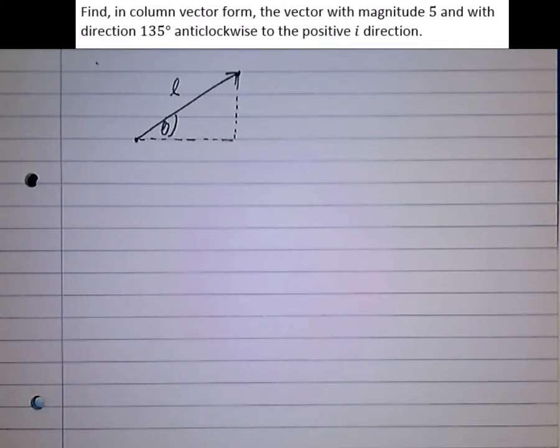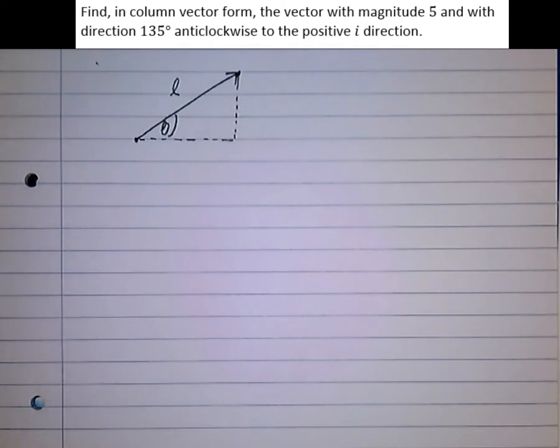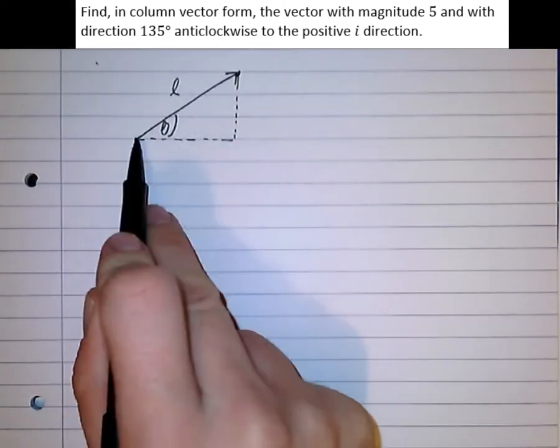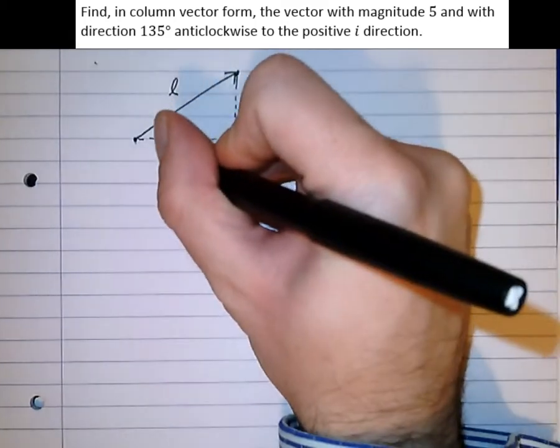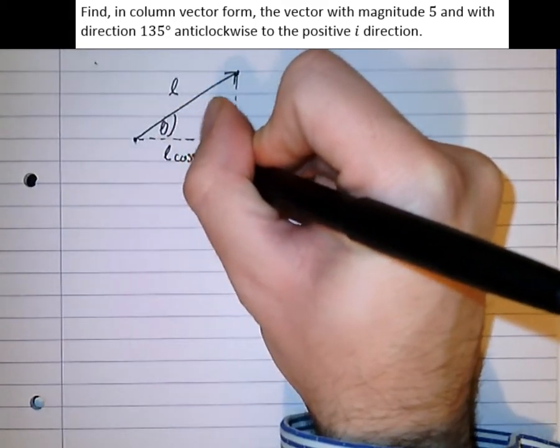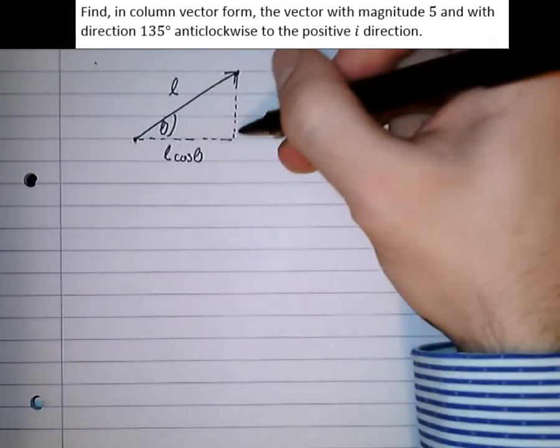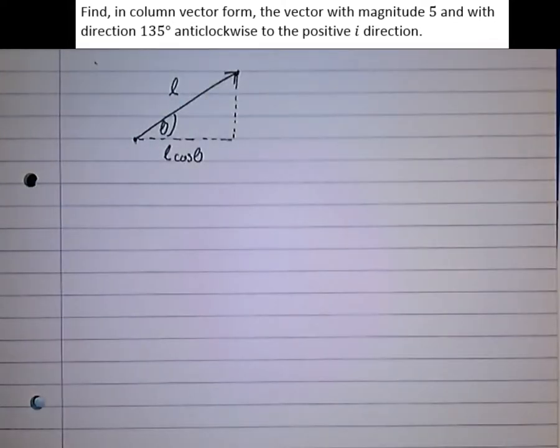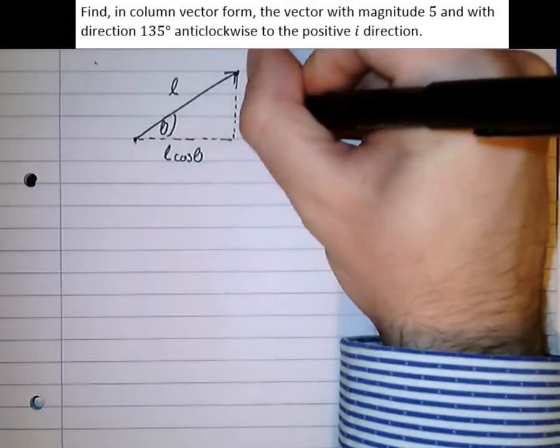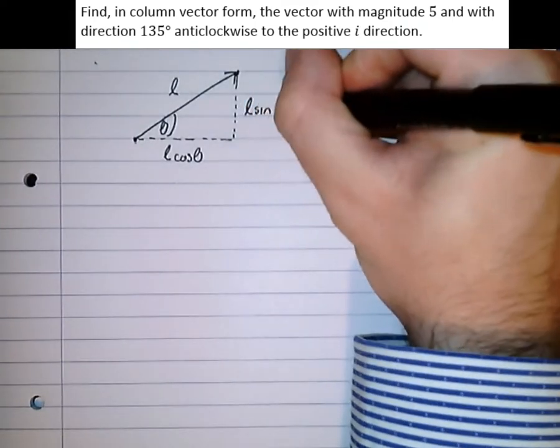Well, when splitting triangles like this into their horizontal and vertical components, the adjacent is always going to be length times cos theta. The vertical, or opposite, component is going to be L sine theta.